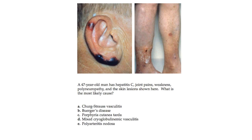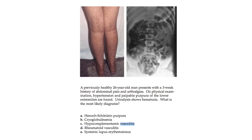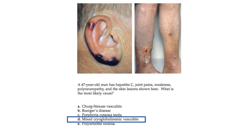Clinical question: A 47-year-old man has hepatitis C, joint pains, weakness, polyneuropathy, and skin lesions. What is the most likely cause? This is very specific — we are homing in on mixed cryoglobulinemic vasculitis, specifically type 2.